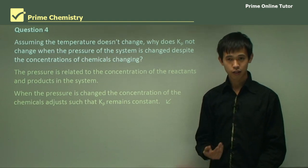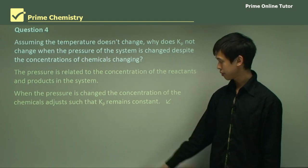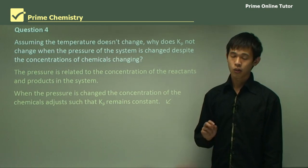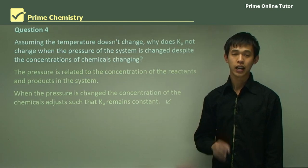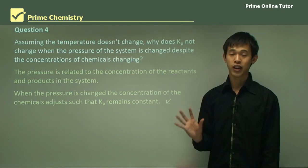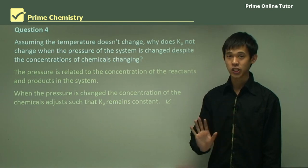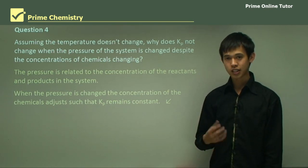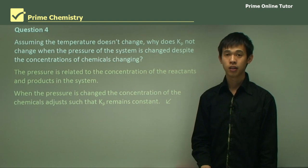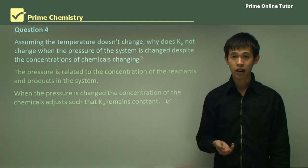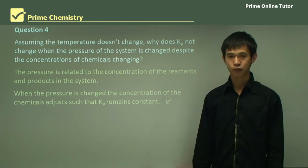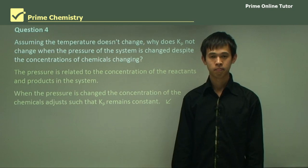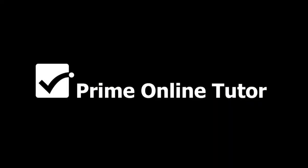So that ends today's lesson on the factors affecting Kp. Now remembering, all you need to really know is that temperature is the only factor that affects the value of Kp. The other ones don't, they just affect the equilibrium position, not the value of Kp. So that's what you should take out of today's lesson. In the next lesson we'll look at how to calculate Kp and practical ways of using Kp. So I look forward to seeing you at our next lesson.